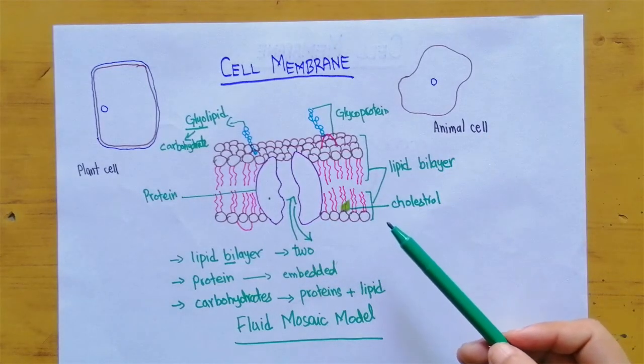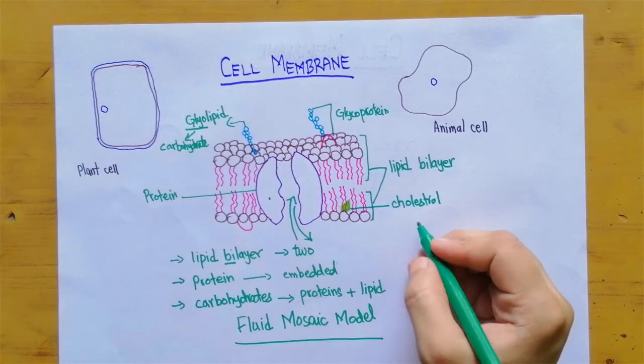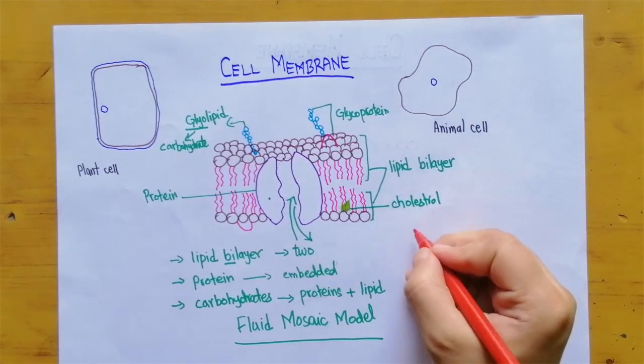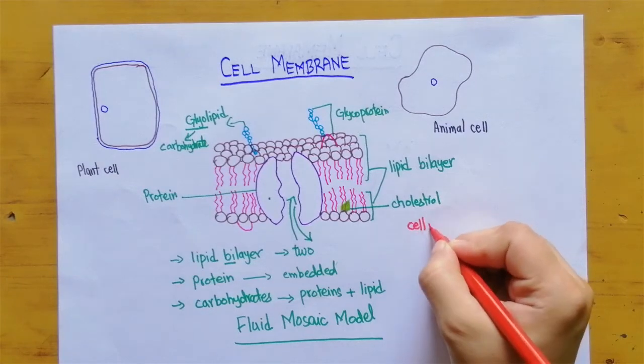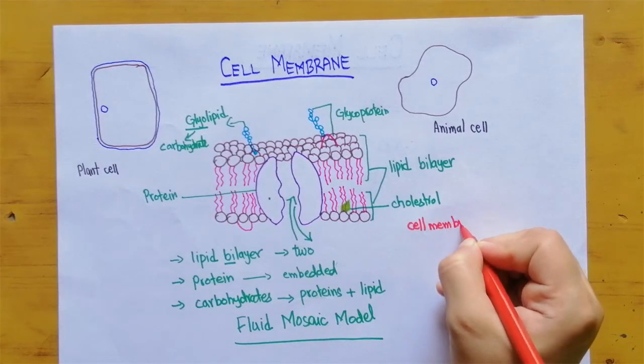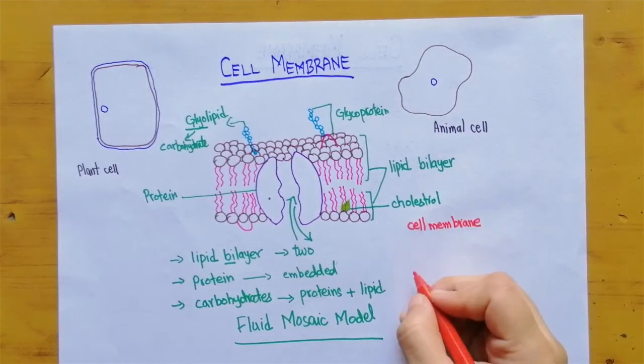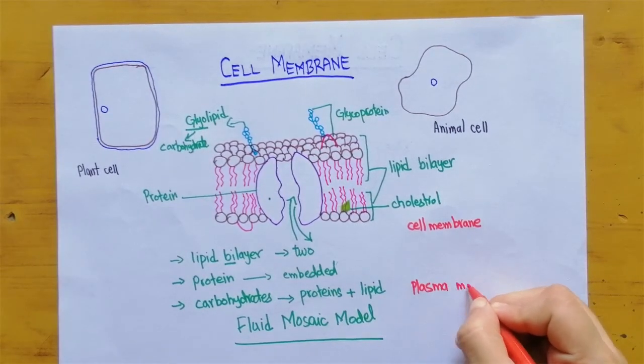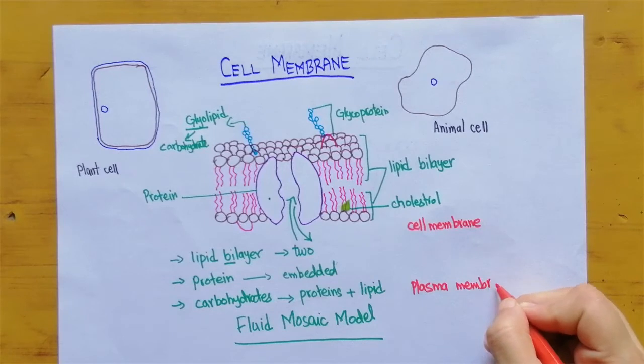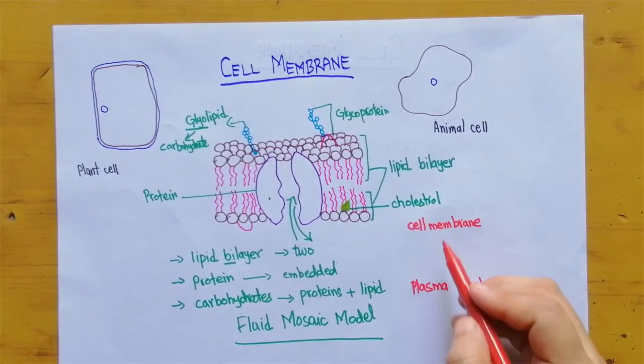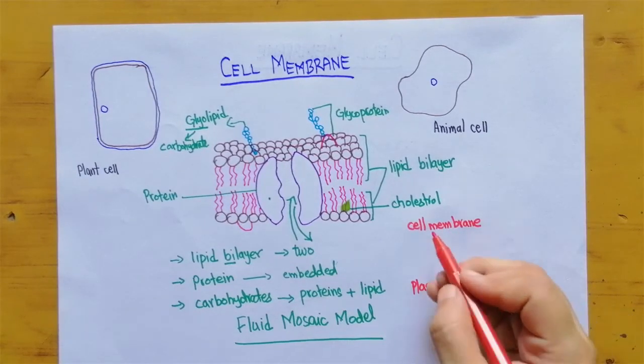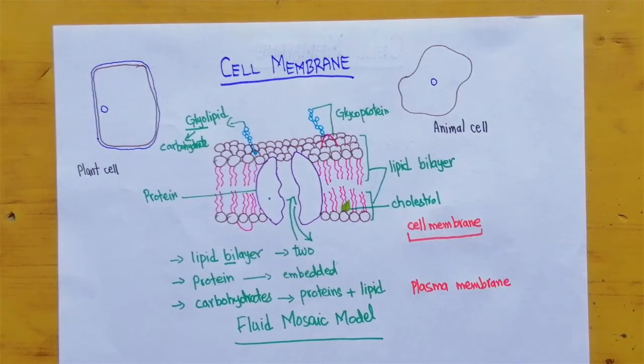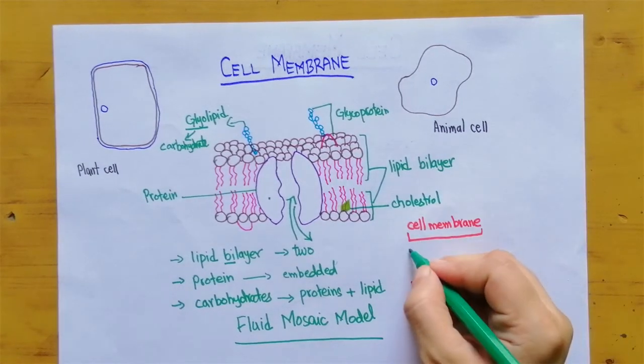When you talk about cell membrane two terminologies are actually used: one is cell membrane and the other one is plasma membrane. So what is the difference between these two terminologies? Actually the cell membrane this term is used for all the membranes of the cell.